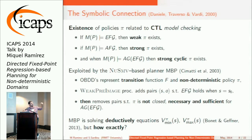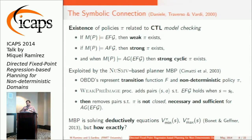For a strong policy it's: always, whatever happens, we will be reaching the goal. For strong cyclic policies you have nested operators — first the guarantee that wherever you are, you may eventually get to the goal, and that's true for every state, meaning that even if you loop, you are still guaranteed to be able to reach the goal. This was exploited by the planner MVP, based on the USMB verification framework, which uses an OBD representation of the transition function and the non-deterministic policy.